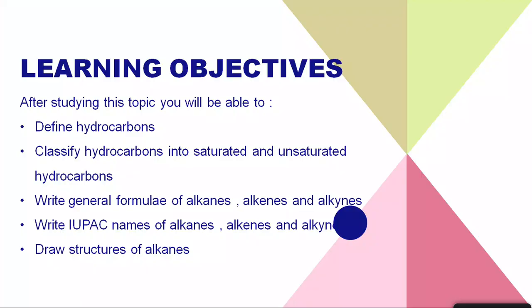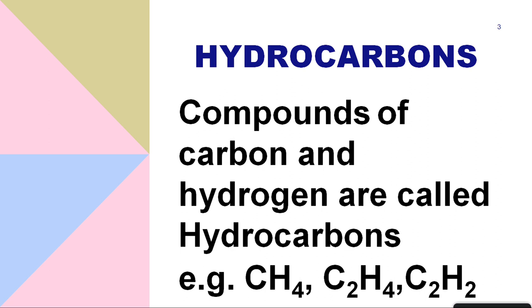Because the valency is four, carbon cannot form ionic bonds; it can form only covalent bonds by sharing its electrons. It can share electrons in many ways: forming all single bonds, one double and two single bonds, or one triple and one single bond. Today we will study hydrocarbons — defining them, classifying them into saturated and unsaturated, and writing general formulas of alkanes, alkenes, and alkynes.